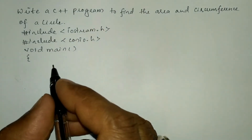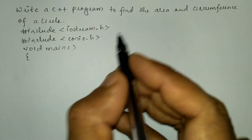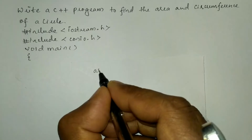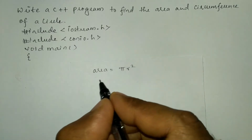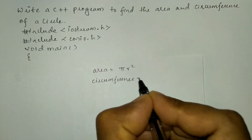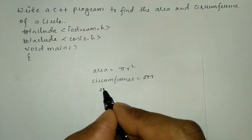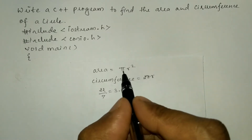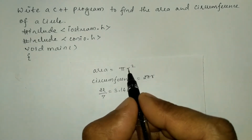In the declaration section we have to declare all the variables. But first let us understand how to calculate area and circumference of the circle. Mathematically, the area of a circle is determined by the formula pi r squared, and the circumference is equal to 2 pi r. Here pi is the constant 22 divided by 7, which is approximately 3.142.